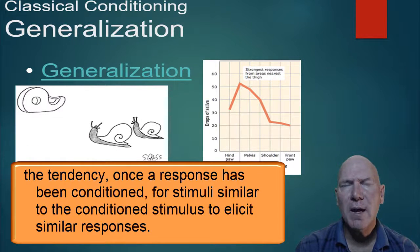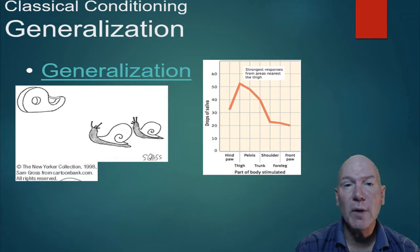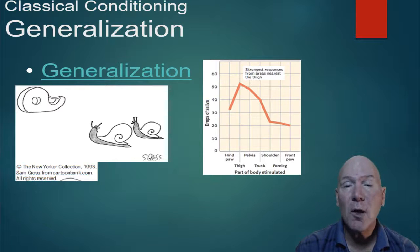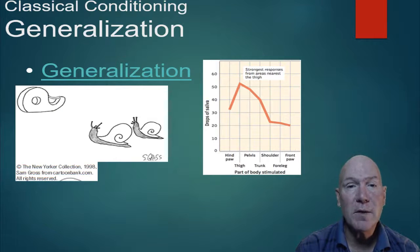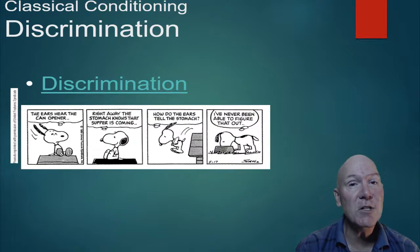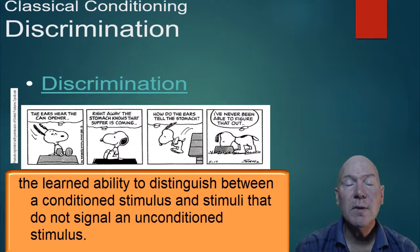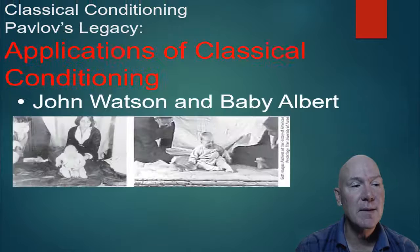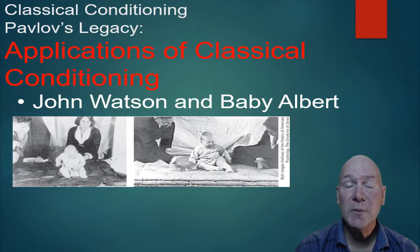Generalization means the conditioned response transfers to similar stimuli — for example, a dog conditioned to salivate at a tone might also salivate at a bell. In the Little Albert experiment, Albert was conditioned to fear a white rat, and then generalized that fear to anything white and furry, including Santa Claus's beard and white fur coats. Discrimination is the opposite — the dog salivates at the tone but not the bell, distinguishing between the two stimuli.